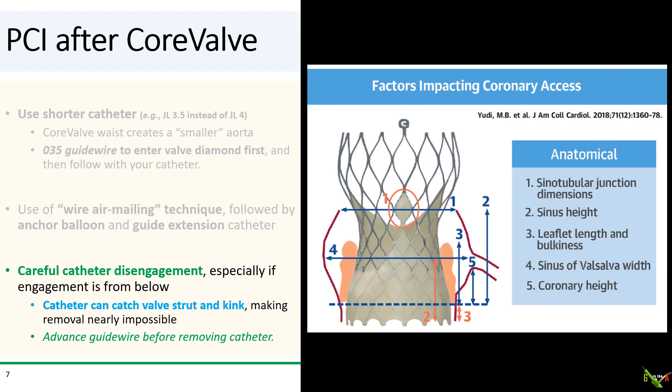Be very careful when disengaging your catheter, especially if you've engaged the coronary from below. This is because the catheter can catch the valve strut as you're pulling it back. After it catches, the catheter can actually kink and become essentially a hook on the tubular valve—and you would then be yanking on the tubular valve as you're trying to pull your catheter out.